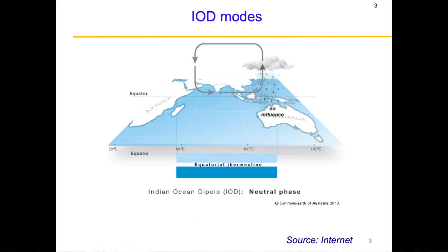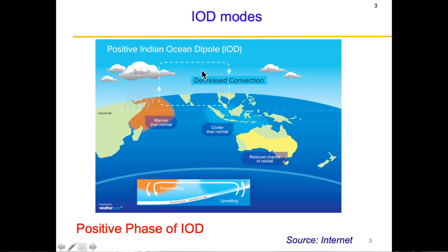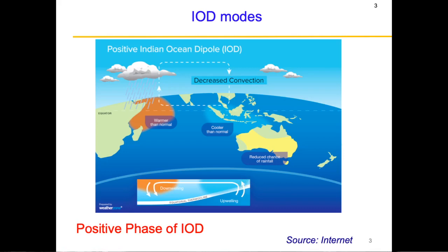Finally, there is the positive phase of IOD. From the neutral phase, the Walker circulation cell reverses direction because the warm pool shifts towards Somalia and the cold pool shifts towards Sumatra. This reversal allows a lot of convective activity in the West Indian Ocean, as the ascending limb of the Walker circulation cell now resides over the West Indian Ocean. The thermocline also preferentially slopes closer to Sumatra. These are the three modes of IOD: neutral, negative, and positive.